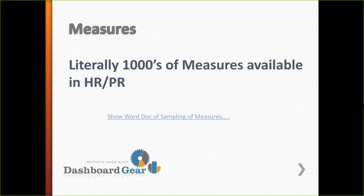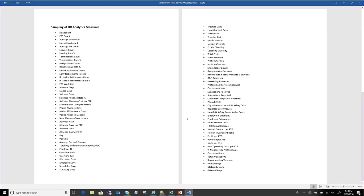In HR there are literally thousands of measures available in the system. I have a Word document that I've been bringing together of common measures out there in the world of HR. As you can see there's headcount, FTE count, average headcount, and so forth. This can serve as kind of a checklist you can use to decide different kinds of measures to track.